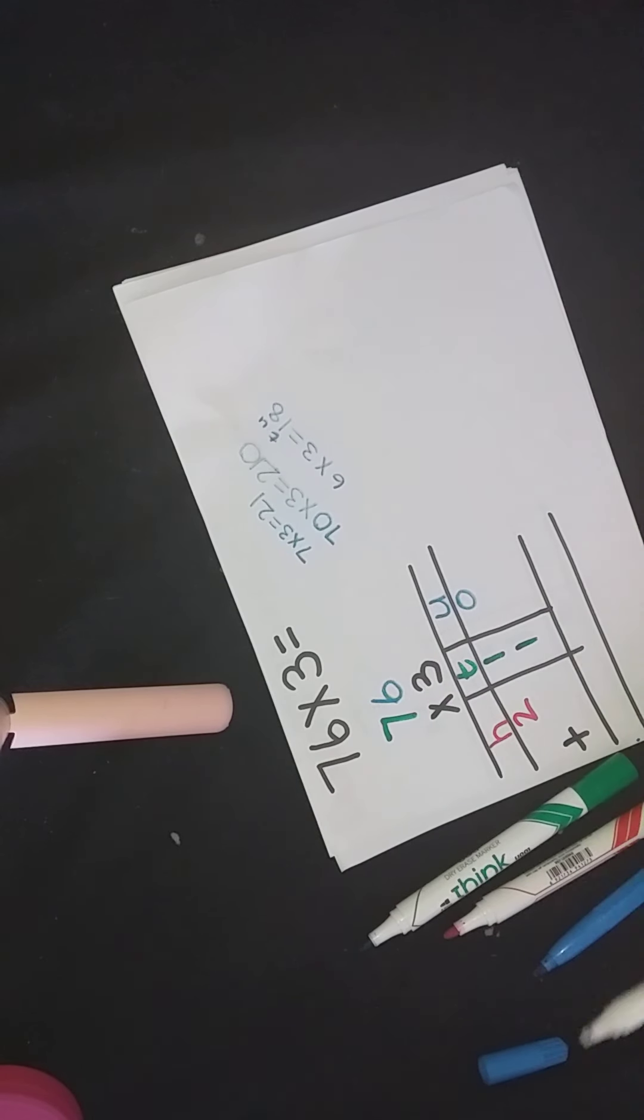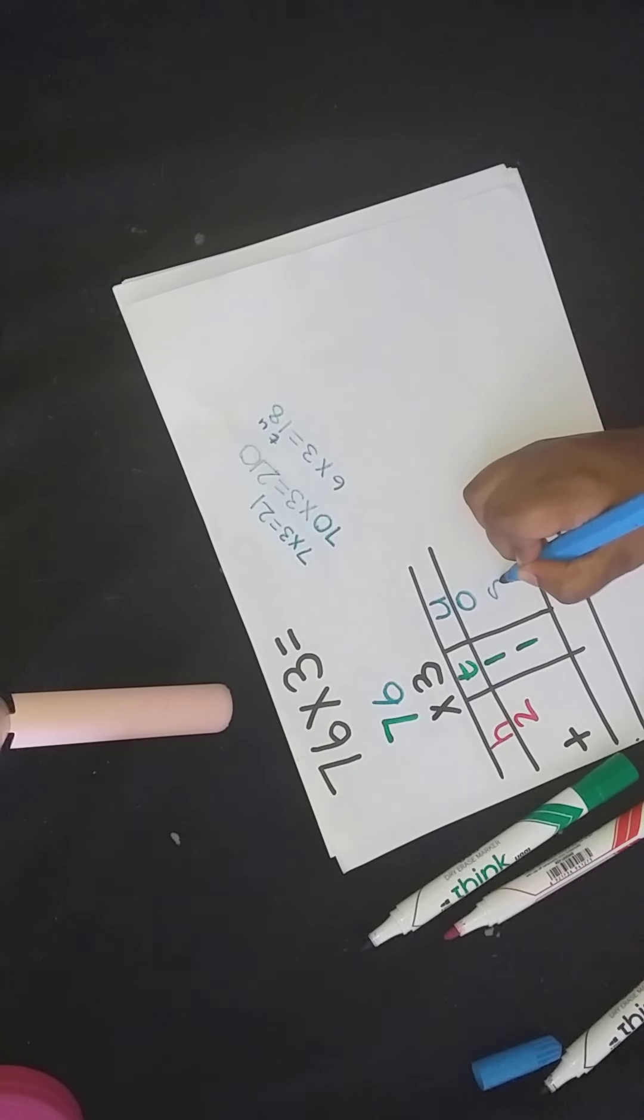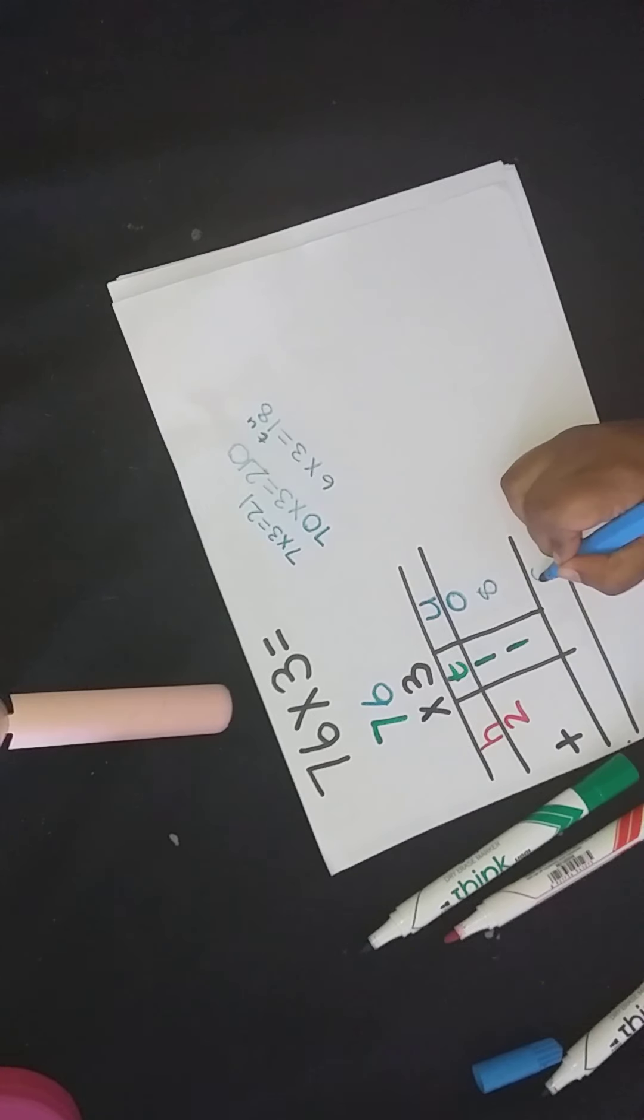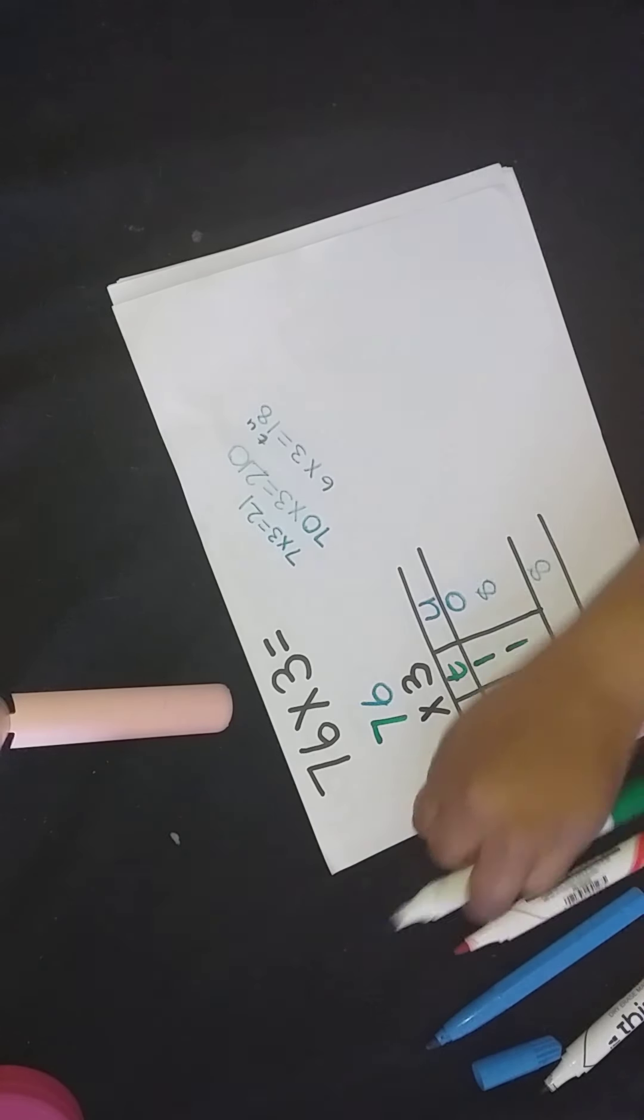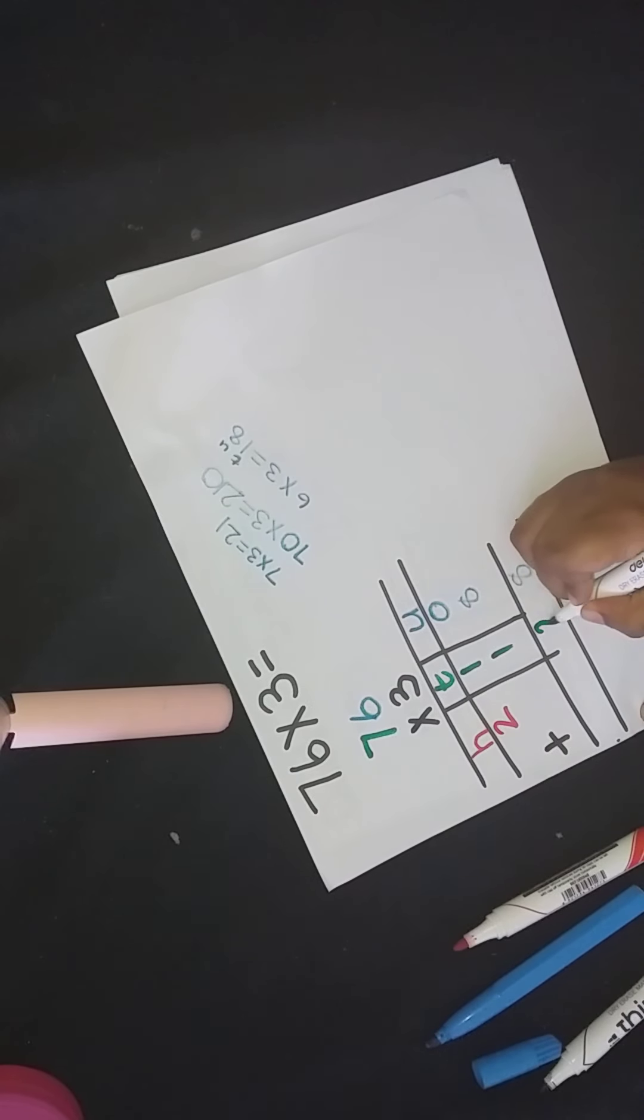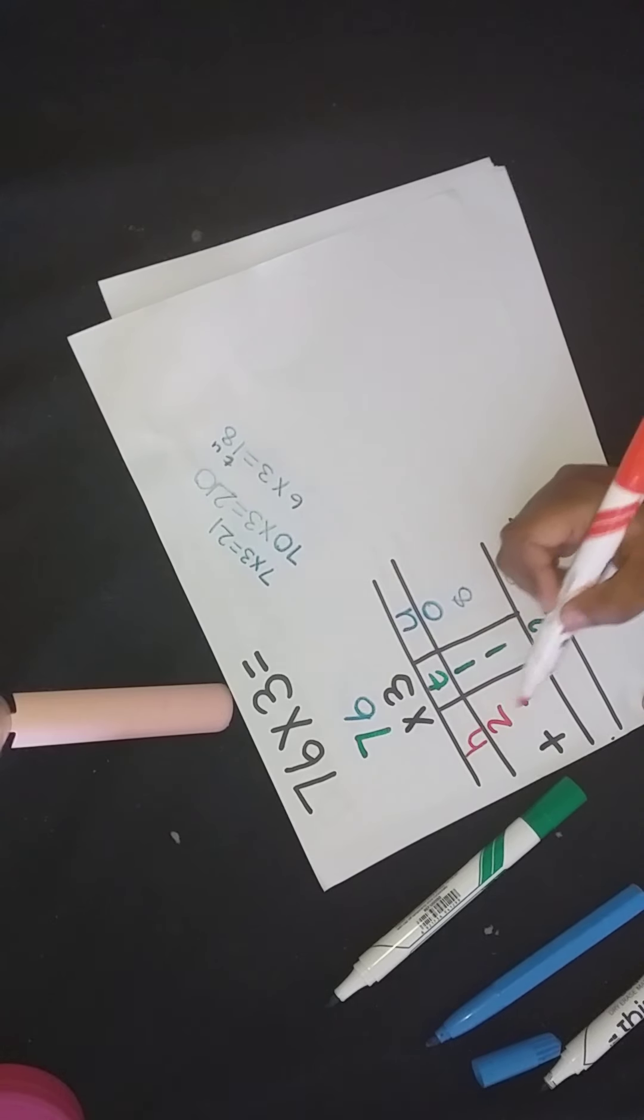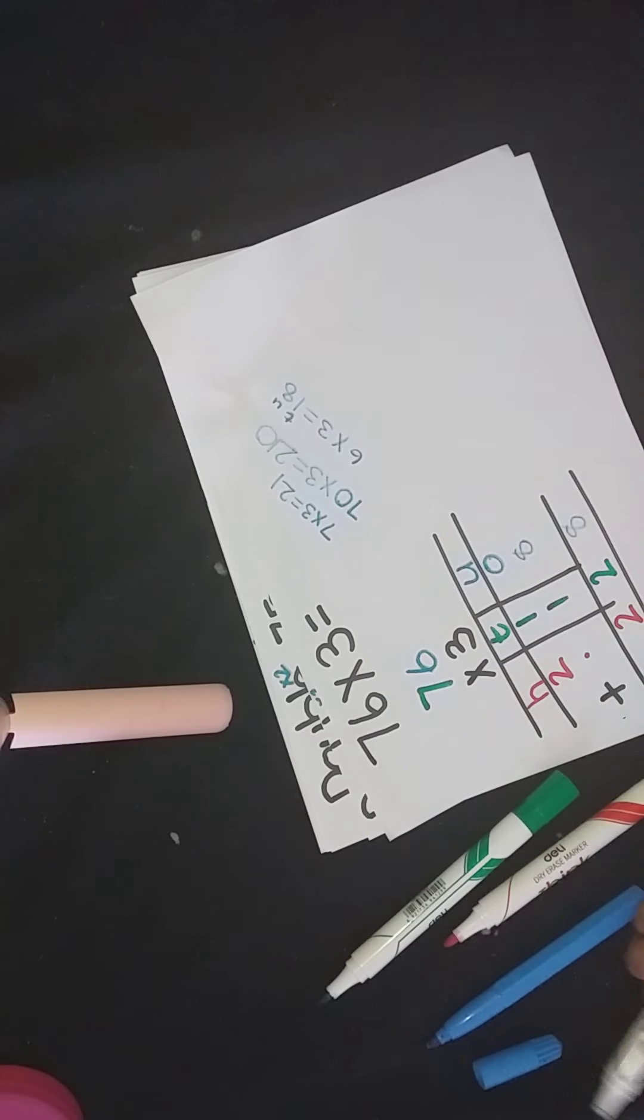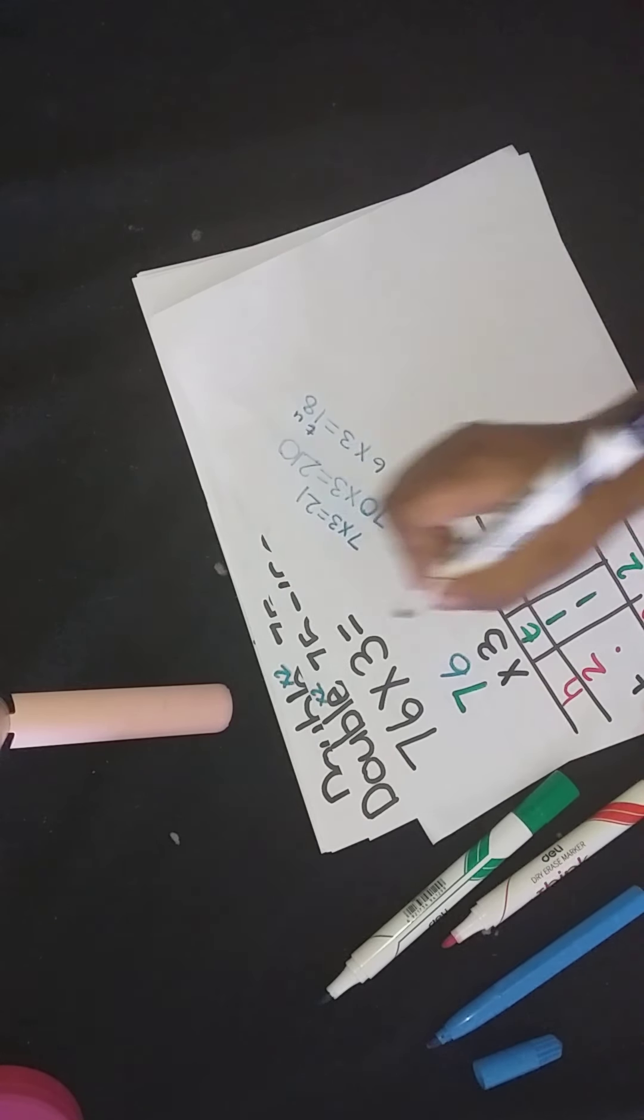Now I'm going to add. Zero and eight is eight. One and one is two. Two, there's a two, but there's nothing. So two and nothing is still two. So 76 times 3 is equal to 228.